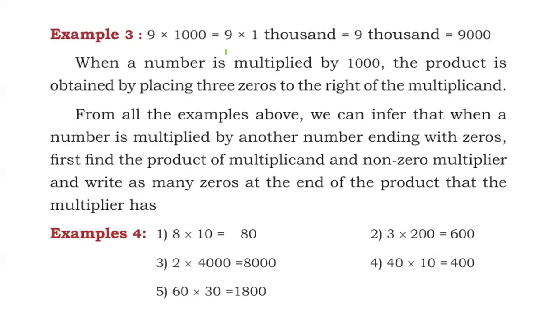In multiplication with 1000, in a similar way, we can do this. Left side number as it is. There are 3 zeros in the right hand side. 9,000. 9 into 1000 is 9,000.